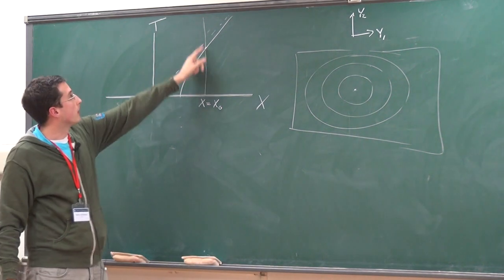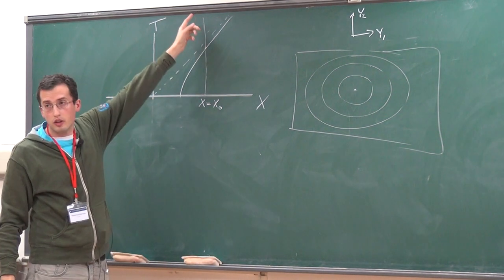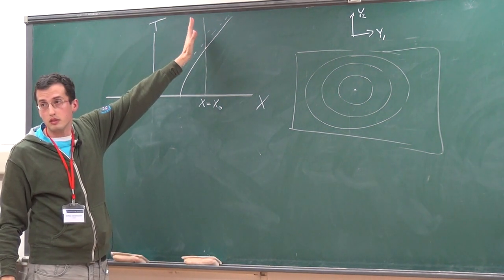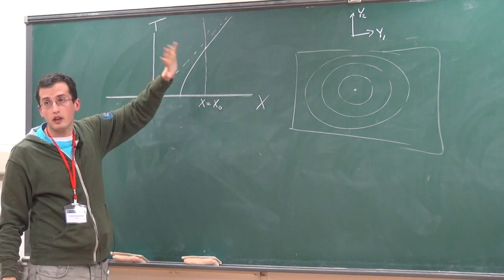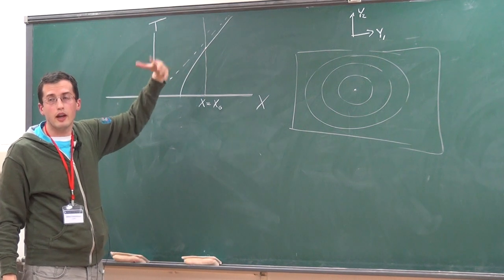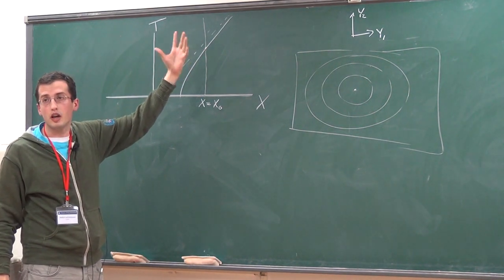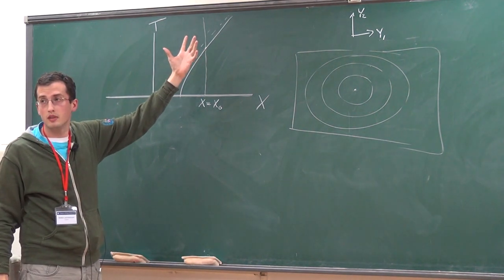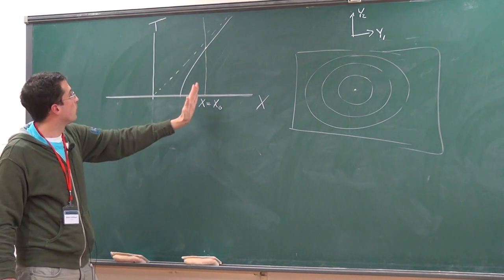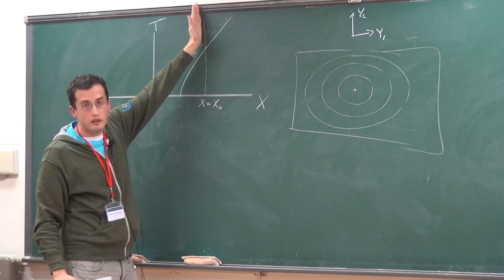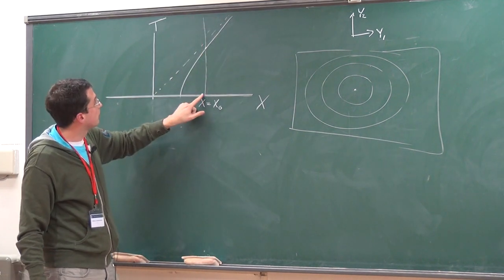If there were no membrane there and the electron just went through, because it has to reproduce the semi-classical geometry physics. So that's basically the method of image charges.